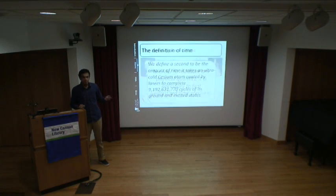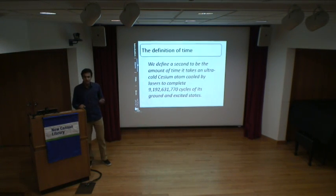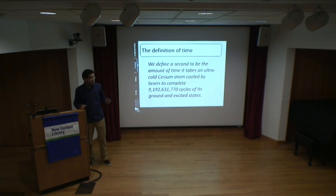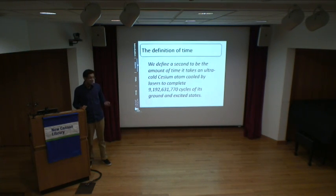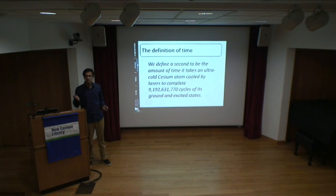So here is how we define a second: a second is the amount of time it takes an ultra-cold cesium atom cooled by lasers to complete 9,192,631,770 cycles of its ground and excited states. That's a heavy definition with a lot of words, but we'll work through it together and it all comes together very neatly.